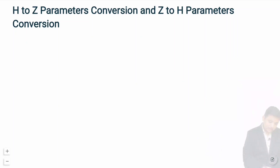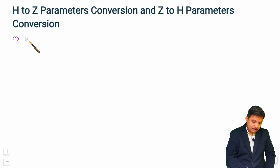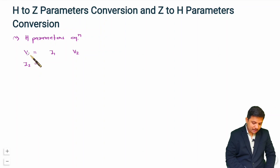When you want to convert h to z or z to h, first of all you should write the equations of h-parameter and z-parameter. When you write h-parameter equations, remember them as: v1, i2 — that is based on i1, v2. You should remember it in this way: v1, i2 based on i1, v2.